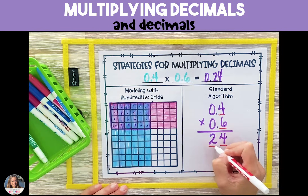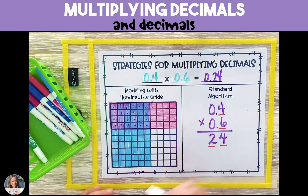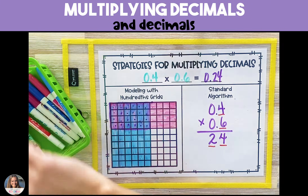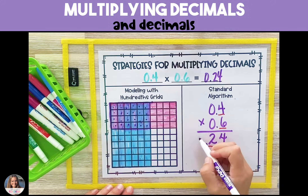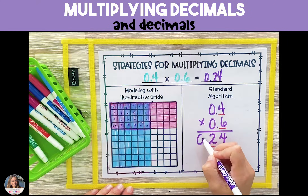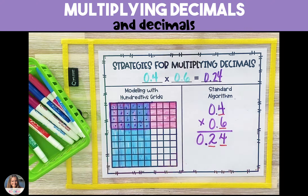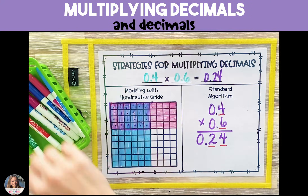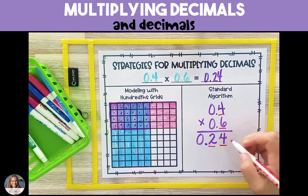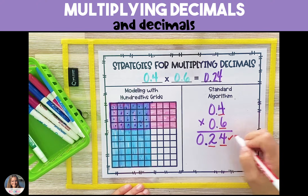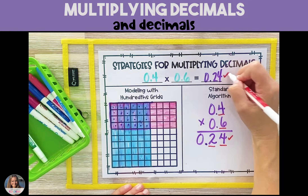Since four tenths has one digit to the right of a decimal point and six tenths has one digit, our product is going to have two digits to the right of a decimal point, and our final product is 0.24, or 24 hundredths.